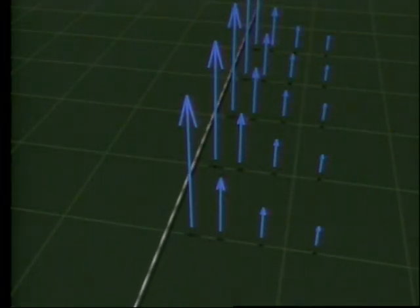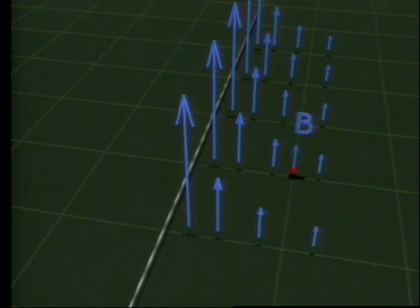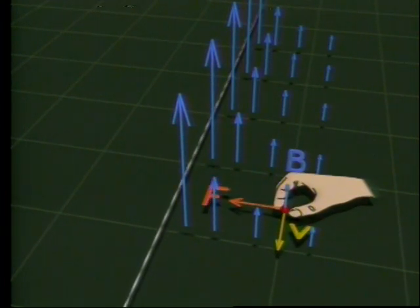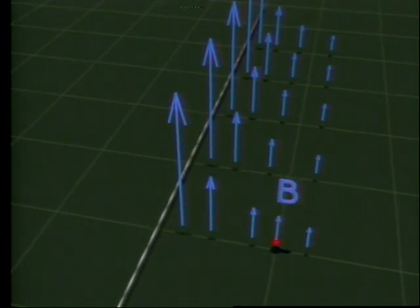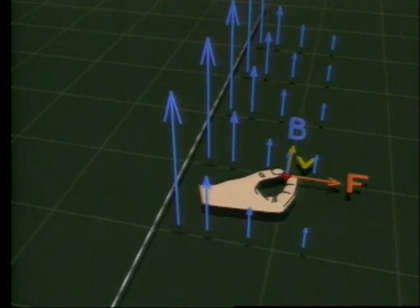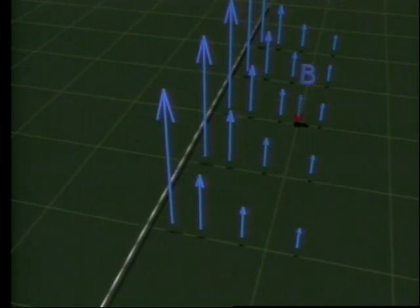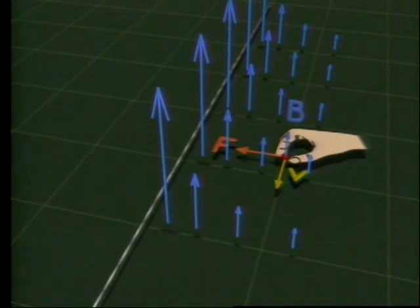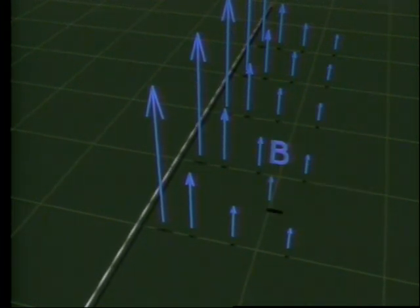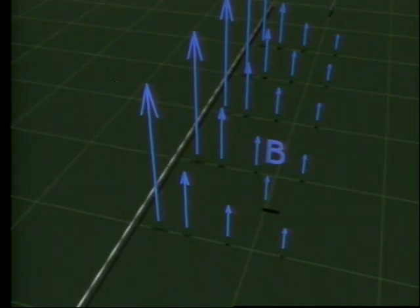A flowing current produces a magnetic field. And a magnetic field applies a force to a moving electric charge. Therefore, since an electric current is nothing but moving electric charges, it follows that flowing electric currents apply magnetic forces to each other.